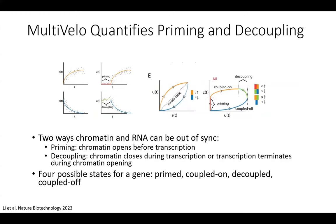There are several other really interesting aspects of this modeling framework to explore. Thinking qualitatively about what this model says about the relationship between chromatin and transcription, there are two ways chromatin and gene expression can be out of sync. This motivated our approach, because measuring both gene expression and epigenome in the same cell lets you see not just when those modalities are in sync, but when they're transiently or permanently out of sync. The first we call priming: this happens when chromatin starts to open but there are no spliced or unspliced transcripts present in the cell, creating a transient interval where the rate of change of chromatin is positive but the rate of change of gene expression is zero.